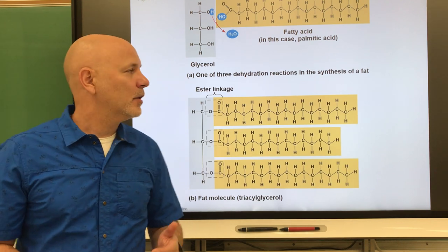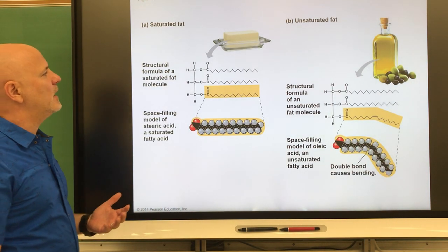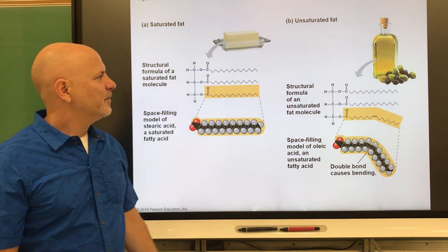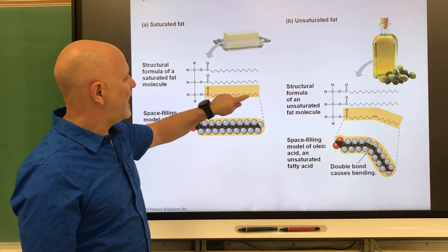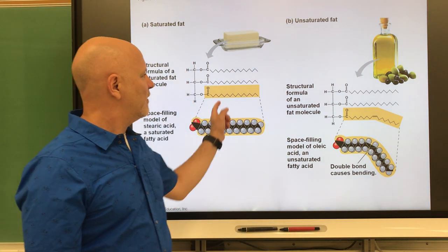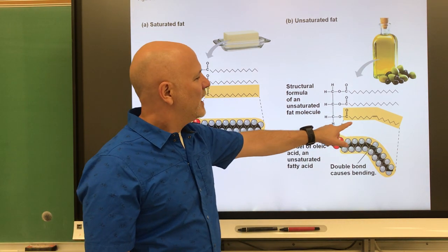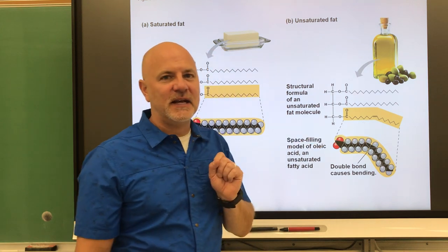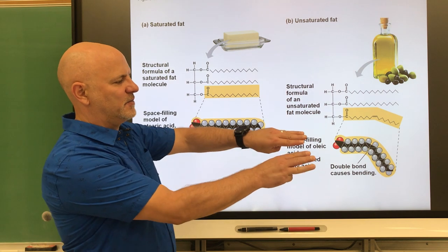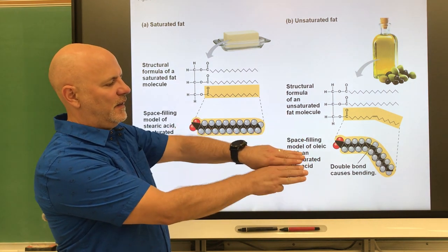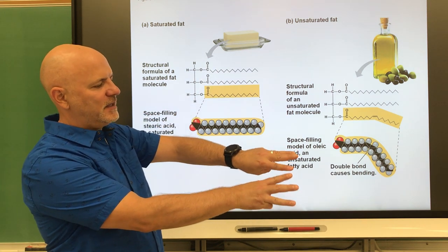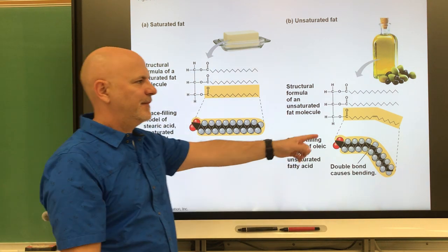Triglycerides are more commonly known as fats and oils. Fats are solids at room temperature; oils are liquids at room temperature. The difference is that an oil will have a double bond in its fatty acid chain, which causes a kink. Those kinks prevent the fatty acid chains from getting close together — that's the chemical difference between a fat and an oil.